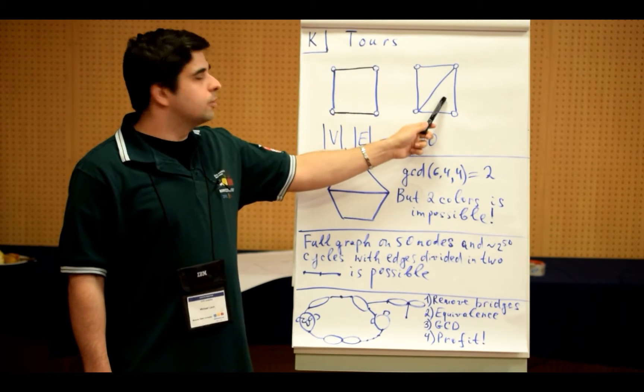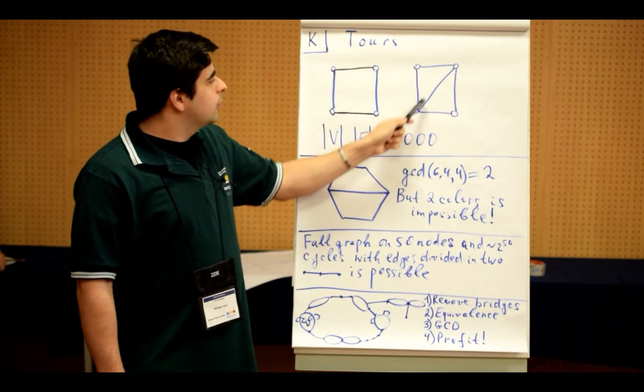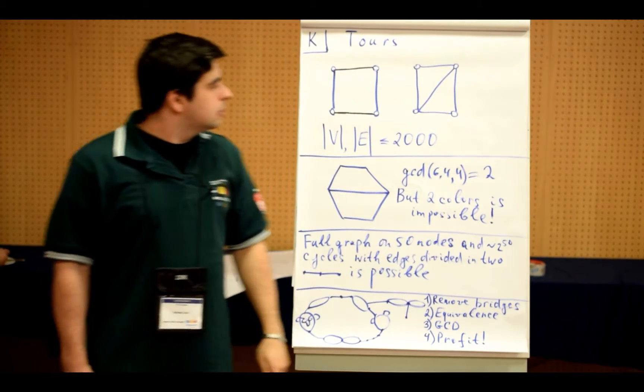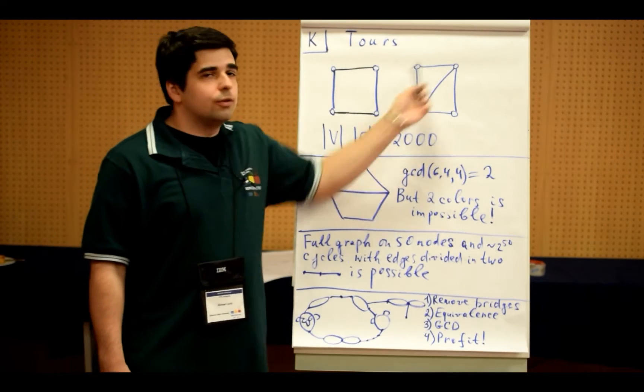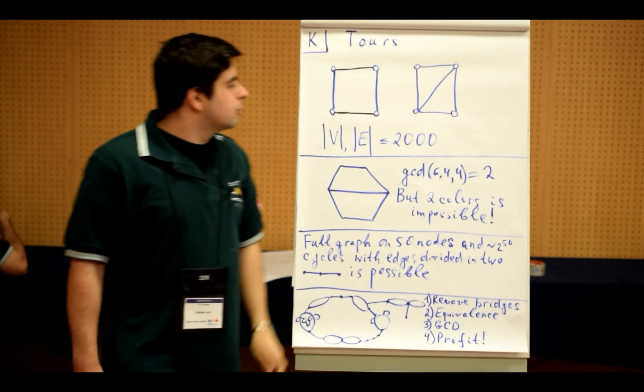And for this case, from the problem statement, the answer is only one, because we have cycles of length four and three. And if we want some number of colors possible, it should divide length of each cycle. So only one divides both three and four, so here answer is only one.